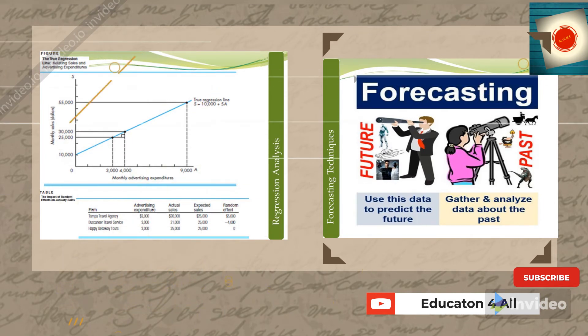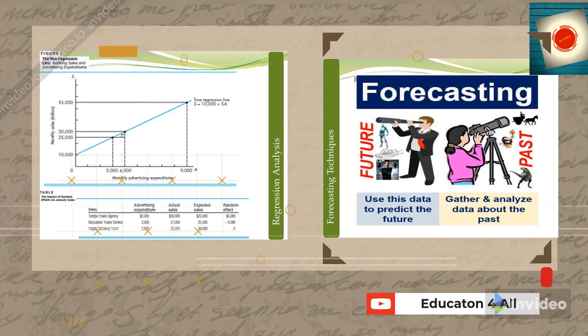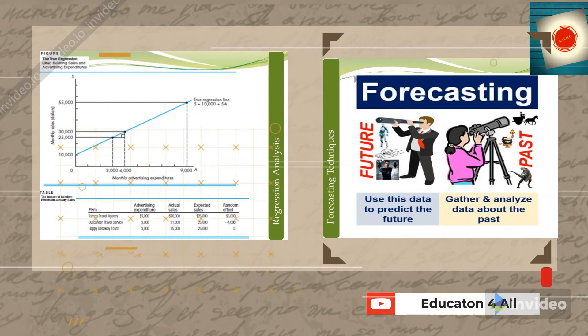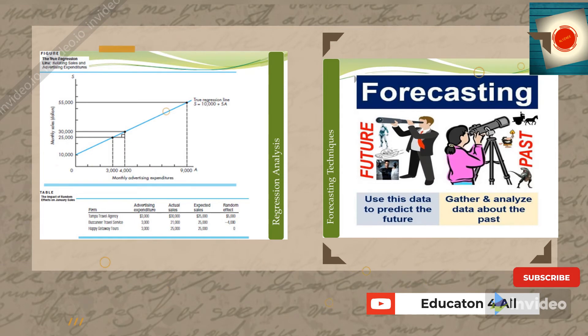This demonstrates that an advertisement cost of $3,000 does not guarantee that every company will get the same profit. Some will go into profit, some will face losses, and some will remain at break-even.